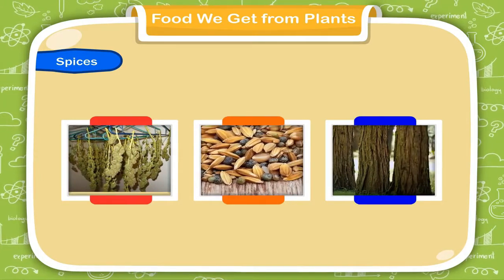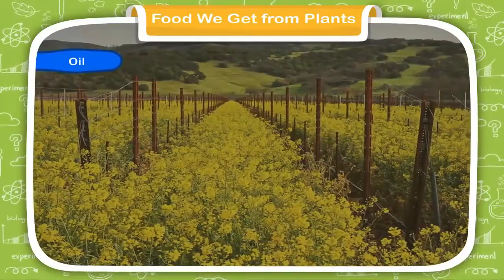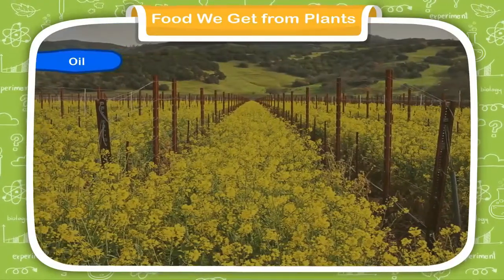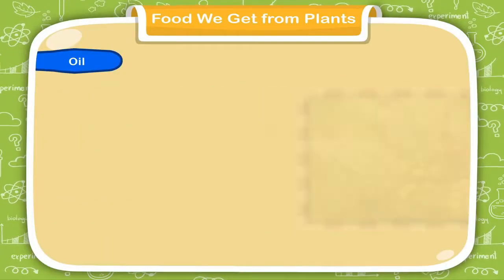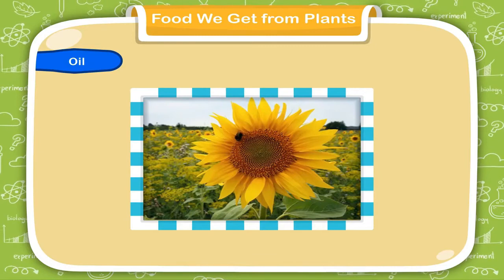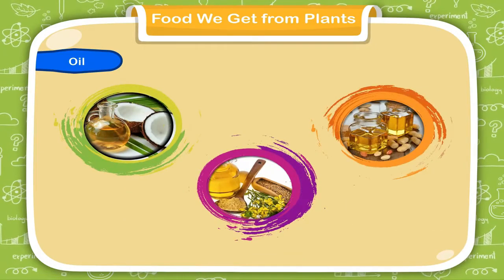Oil: The seeds of some plants, such as ground nut, mustard, coconut, sunflower, etc. give us oil. Oil is used as a medium for cooking.